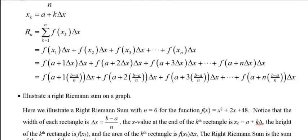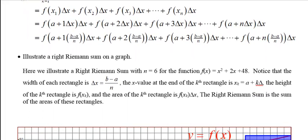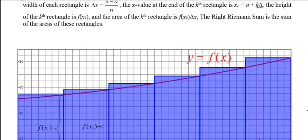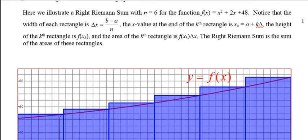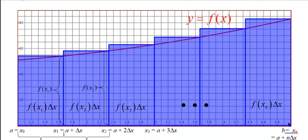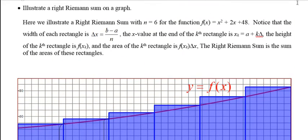So how could we illustrate this on a graph? For an example, I'm going to use the formula f(x) equals x² plus 2x plus 48. And so I'm going to graph that. And I'm going to let n be, say, 6. So let's see if we can figure out what's happening here. First of all, we're going to go from a to b. Now, what's a and b going to be? Looks like I've got it going from 1 to 5, it looks like. So if we go from 1 to 5, a is 1, b is 5.